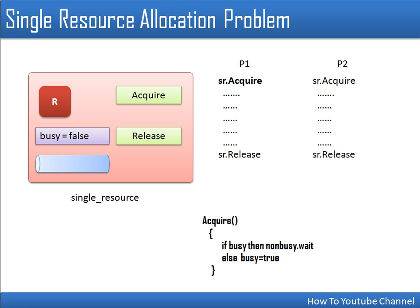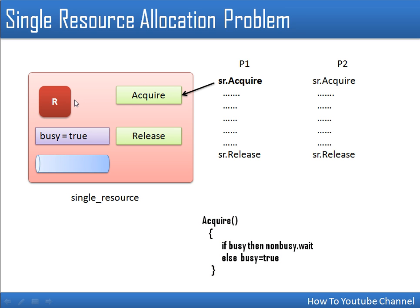In the acquire procedure, initially busy is false. Since busy is not true, we go to the else part and set busy to true, so the resource is allocated to P1. P1 now has resource R and continues its execution, performing some operations on this resource. Meanwhile, P2 also tries to access resource R.